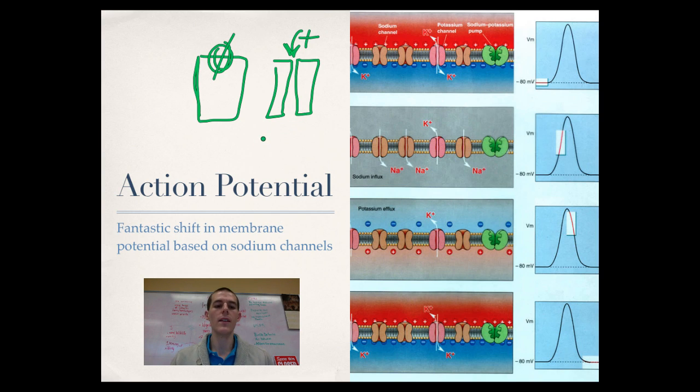This idea of an action potential is kind of a positive feedback loop, where as these channels get triggered, they let ions flow in. The flow of ions flying inside causes a stimulus that triggers the next set of ion channels to fly open, and so on down the line. The stimulus to open is being propagated by the channels opening and the charge changing from one side of the membrane to the other.